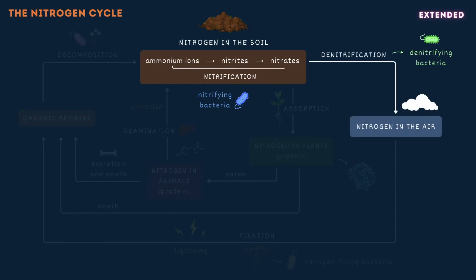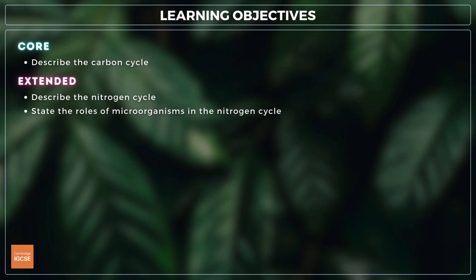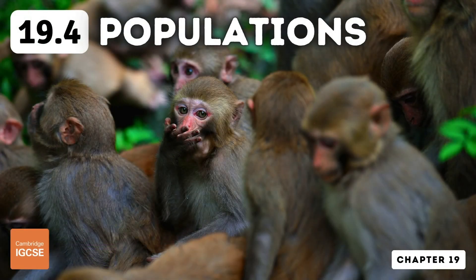Finally, nitrogen is released back into the atmosphere through denitrification. Denitrifying bacteria obtain their energy by breaking down nitrates to nitrogen gas, which replaces that removed from the atmosphere by nitrogen fixation. Collectively these processes result in the continuous cycling of nitrogen, which is essential for the growth of plants and the functioning of ecosystems. Well done, you've just covered everything you need to know on topic 19.3 nutrient cycles.